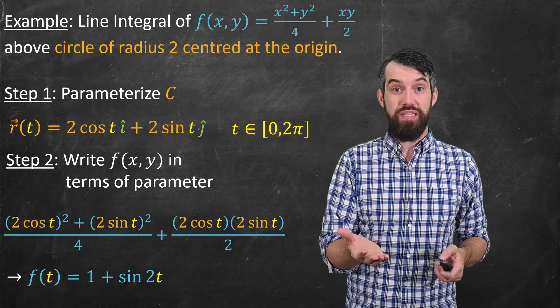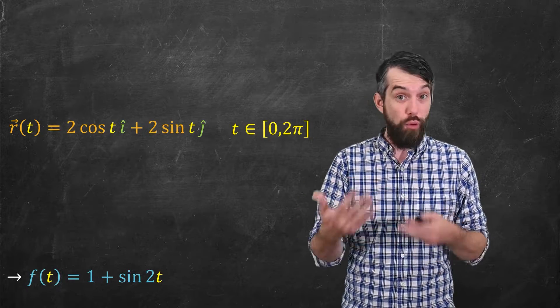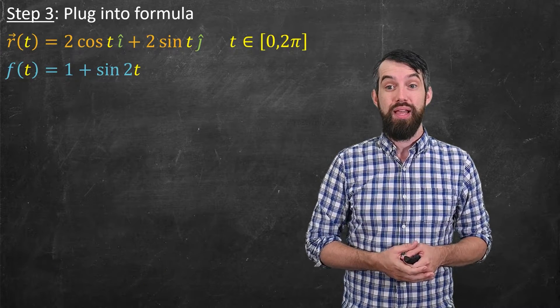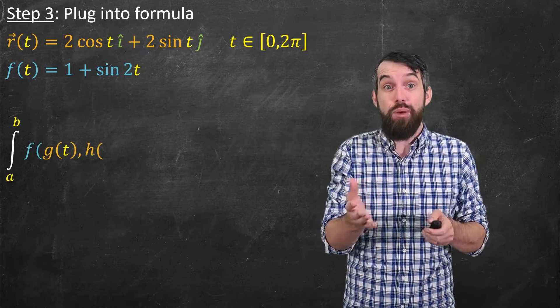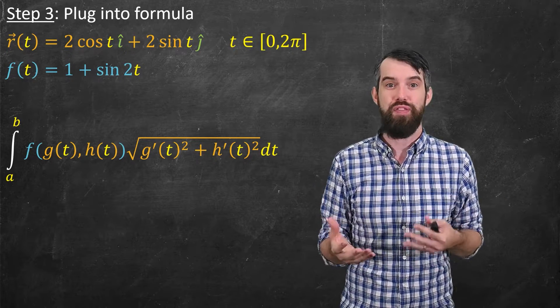So those are my two pieces of data that I have. My r, my curve, and then my f, my function. And both of these are described now entirely in terms of t. So my third step is to take those two pieces of information and plug them into our formula. This is the big formula that we have. Well, this is straightforward.